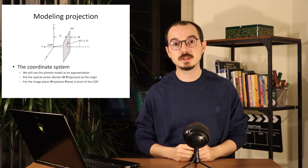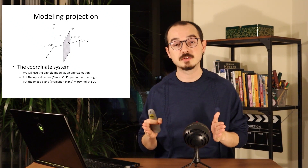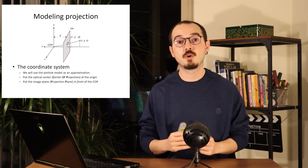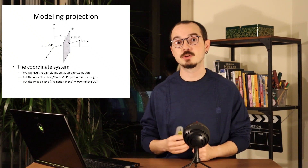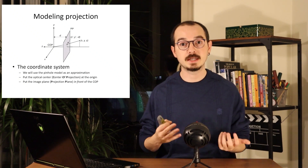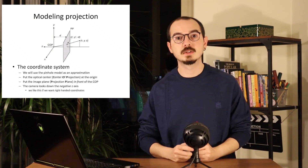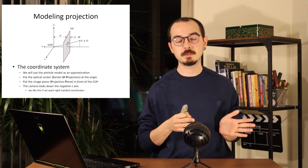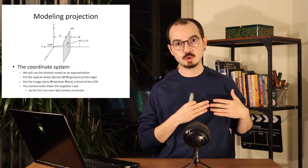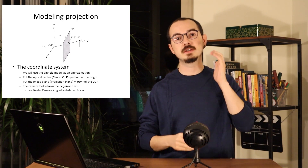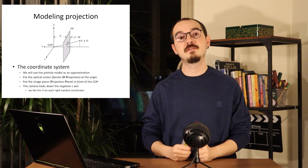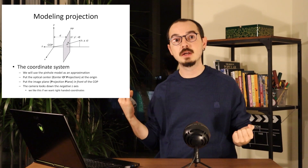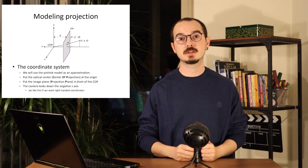Then we will put the image plane in front of the center of projection. This is just because it is more convenient for us to derive equations or think about how the camera takes a picture. And in this coordinate space we will set things as the camera looking towards the negative Z, so that the X and Y directions feel similar to what we are used to when dealing with images.